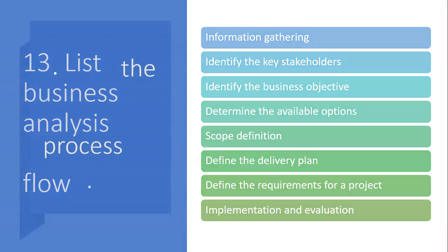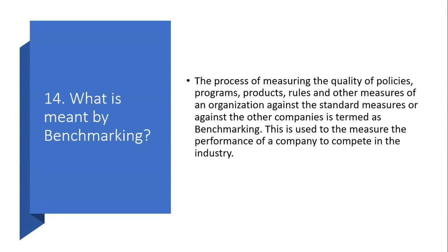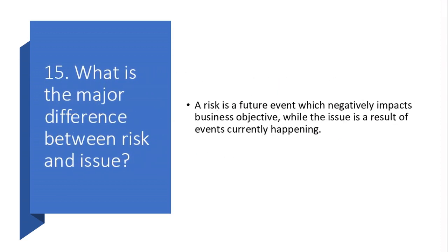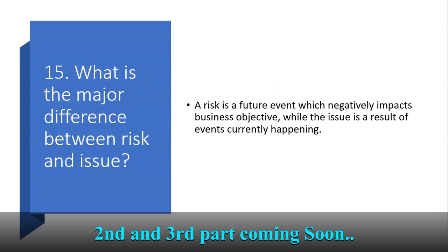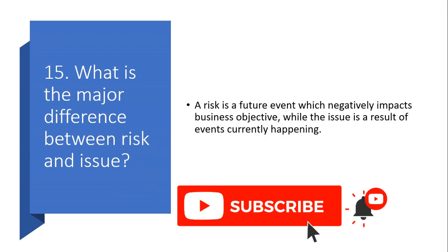Question 14: What is meant by benchmarking? The process of measuring the quality of policies, programs, products, rules, and other measures of an organization against standard measures or against other companies is termed benchmarking. This is used to measure the performance of a company to compete in the industry. Question 15: What is the major difference between risk and issue? A risk is a future event which negatively impacts a business objective, while an issue is a result of events currently happening.